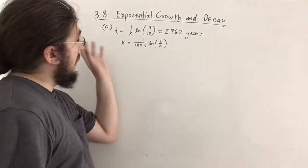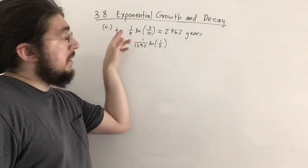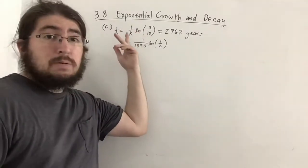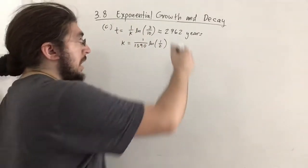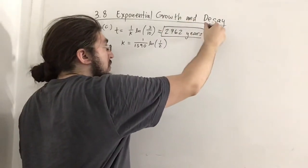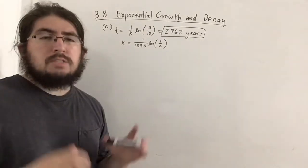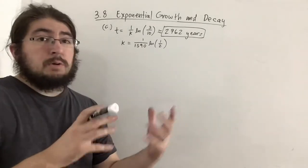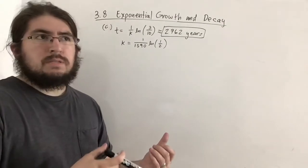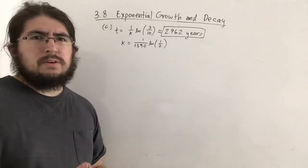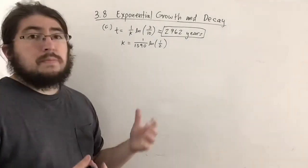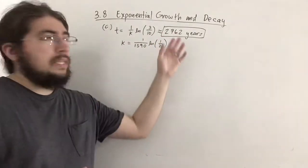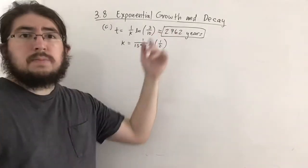Plugging 1/k · ln(3/10) into the calculator, we get t ≈ 2762 years. This makes sense: the half-life is 1590 years. After 1590 years we'd have 50 mg, and after another 1590 years (3180 total) we'd have 25 mg. Since 30 is a little more than 25, it should take a little less than 3180 years — and 2762 checks out.